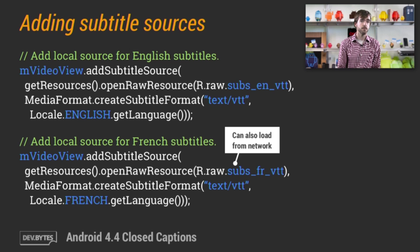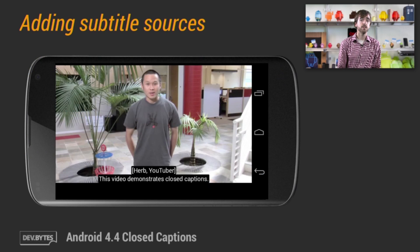To attach these subtitles to a video view, we just need to add a few lines of code. Here, we're opening an input stream for locally stored captions in both English and French. However, you could just as easily attach an input stream created from a network resource, but that's outside the scope of this DevByte. If the user has enabled captions in settings, they'll see them when the video plays. Here's what that looks like in a very simple app. The captions are rendered in the user's chosen style — white on black — using the correct positions from the timed text file.